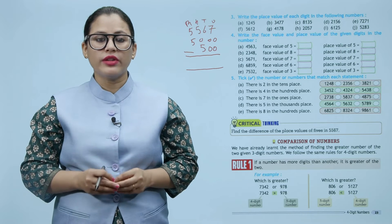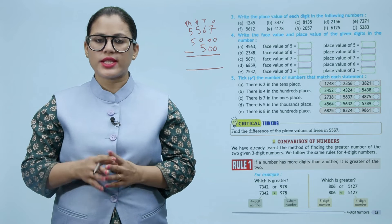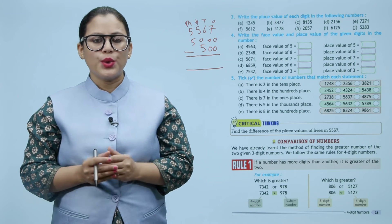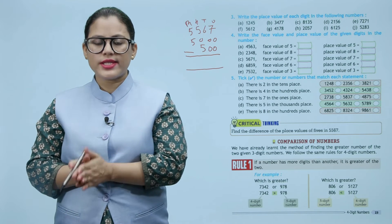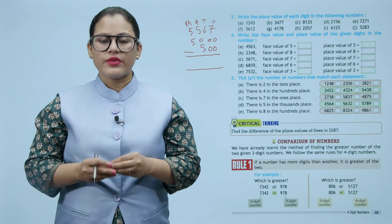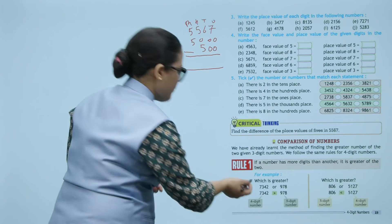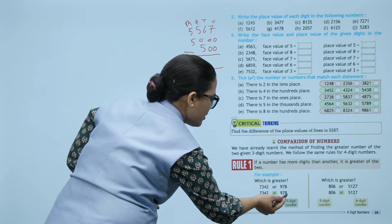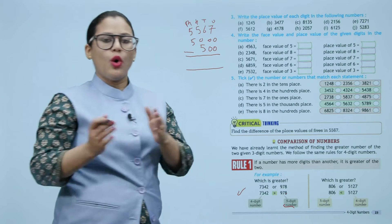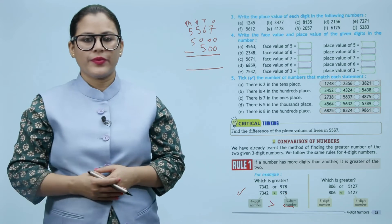Comparison of numbers. We have already learned the method of finding the greater number of two given three digit numbers. We follow the same rules for four digit numbers. Rule number one: if a number has more digits than another, it is greater of the two. For example, which is greater — 7342 or 978? 978 mein three digits hain aur 7342 mein four digits hain, so obviously four digit number is greater.